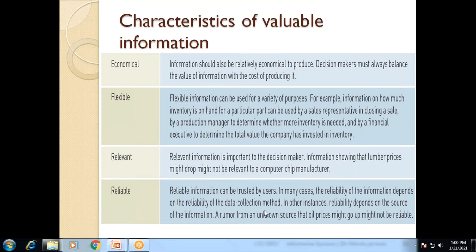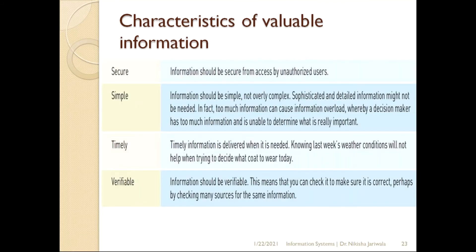The next characteristic is secure. Information should be secure, meaning no unauthorized user should be able to access it. If any random person can access your information, it can fall into the wrong hands and be misused. Only users who have authority to use the information should be able to access it — that is secured information.